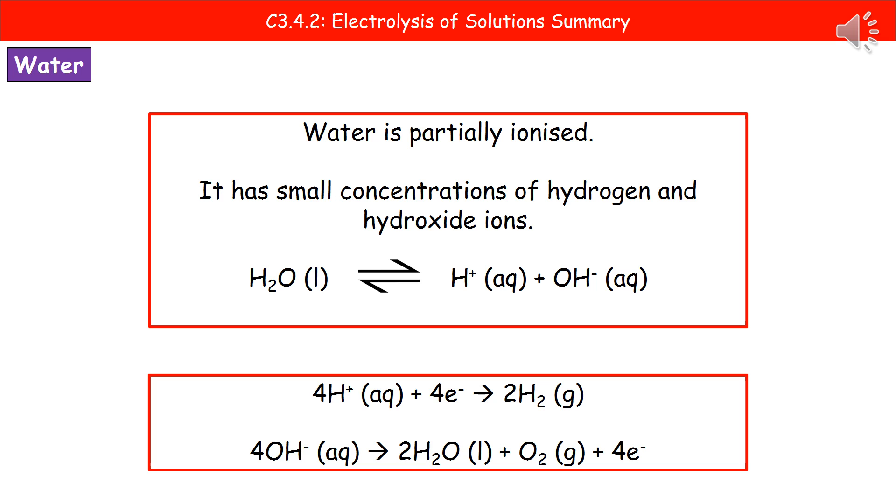We can take each ion in turn and see what happens. Hydrogen ions are attracted to the cathode because hydrogen is positive and the cathode is negative. Four hydrogen ions, when they contact the cathode, gain electrons—four H+ plus four electrons. As a result, we make two molecules of hydrogen gas, H2.